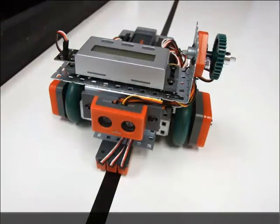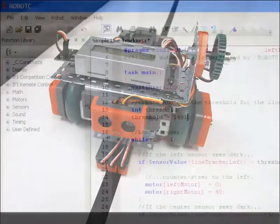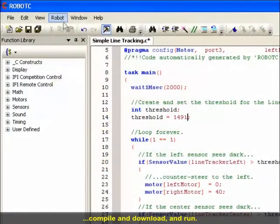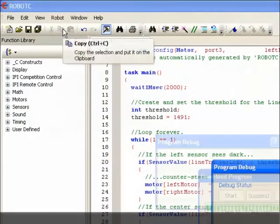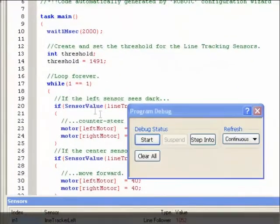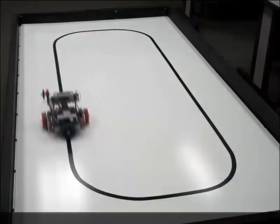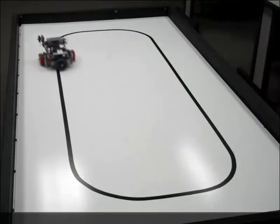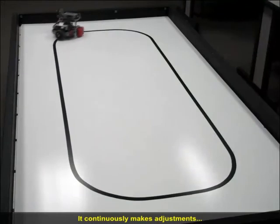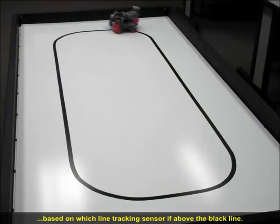Time to try it out. Place your robot on the line. Compile and download, and run. The robot tracks the line. It continuously makes adjustments based on which line tracking sensor is above the black line. Great.